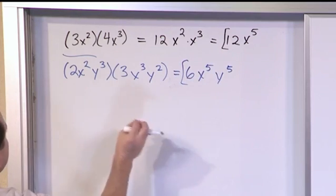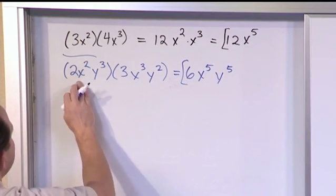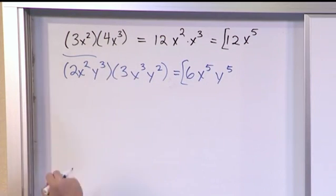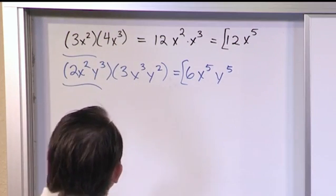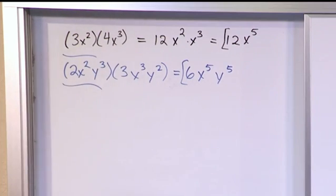So I have 6x to the fifth times y to the fifth. So anytime I'm multiplying terms together that have exponents, if they have the same base, I can just add the exponents together. And that is something we've learned before. We're just kind of introducing it again here more as a review, but also so that you will have the foundation to continue on with some of these other problems in a minute.